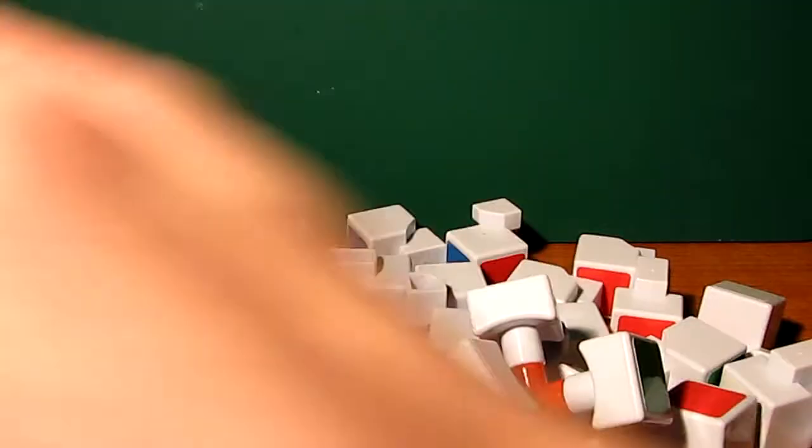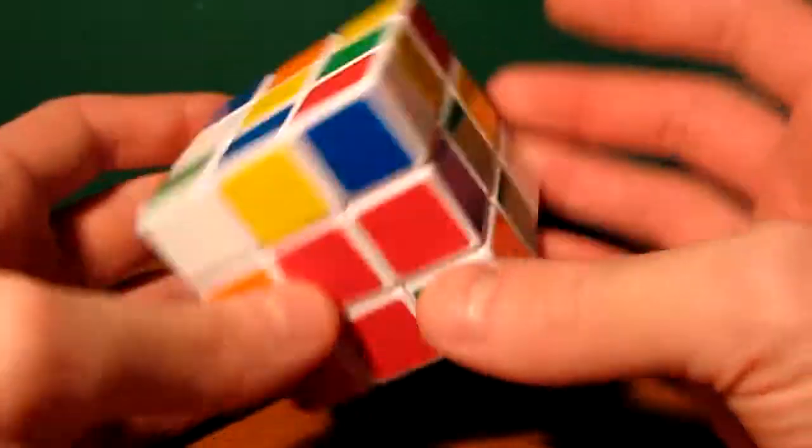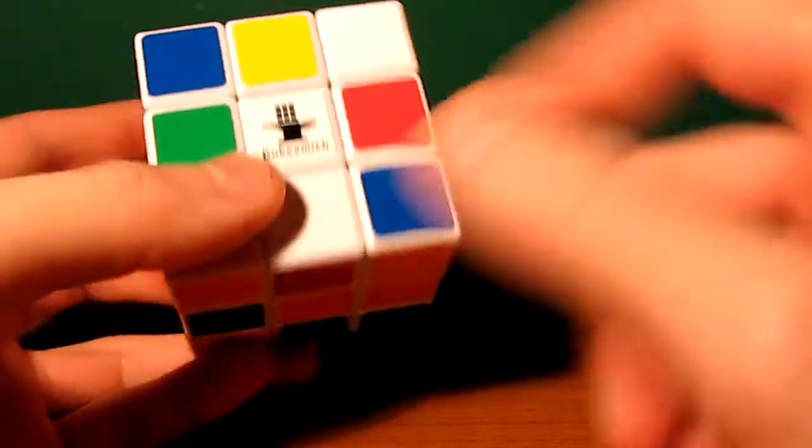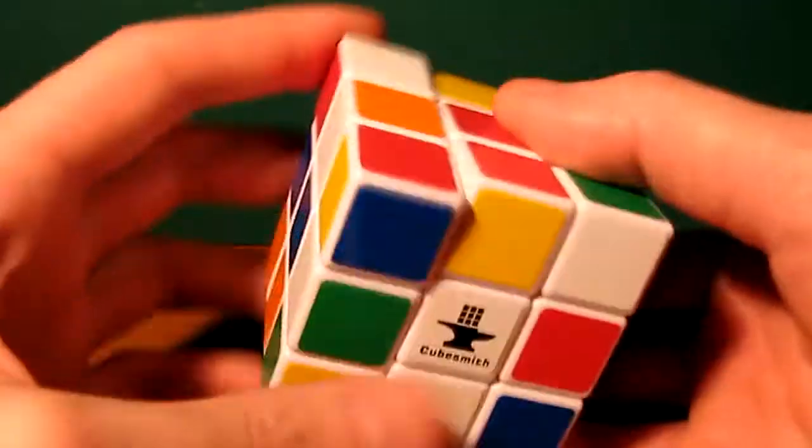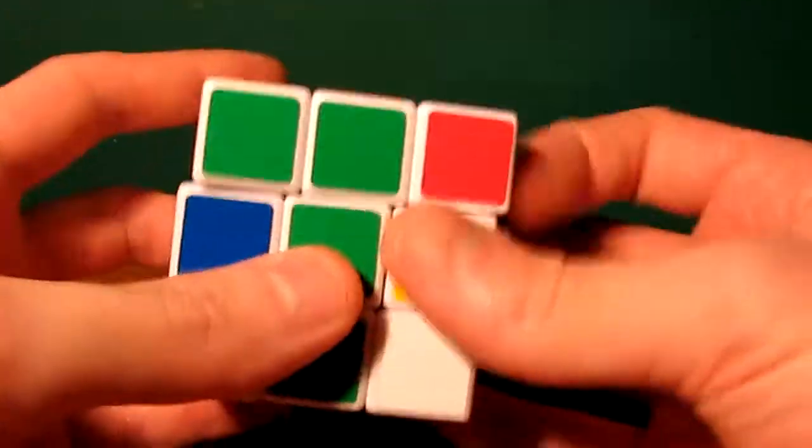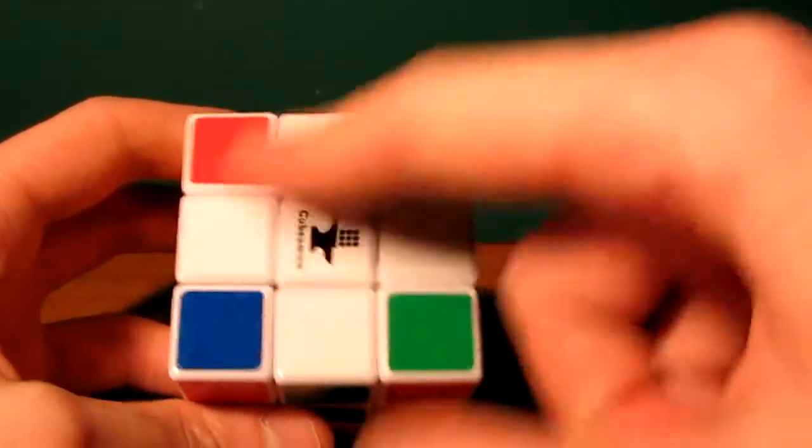Now before we actually get into how to solve a cube and the instructions, I'm just going to give you a quick example of the method we're going to use here. And the method starts out, the first thing you're going to do is pick a side. I almost always start with white. Next thing the method does is we're going to get the cross on that side. So I'll do that here. Here we go. We have the cross on the white side.